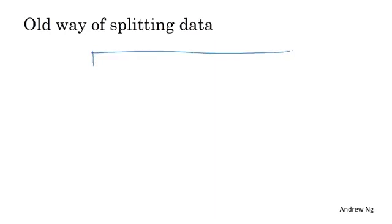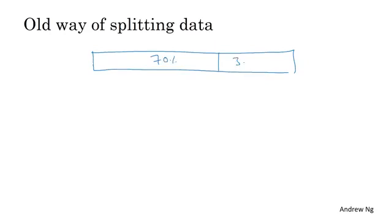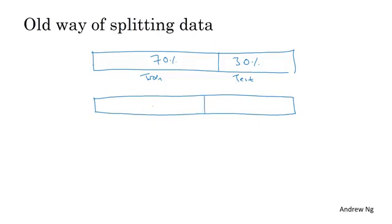You might have heard of the rule of thumb in machine learning of taking all the data you have and using a 70-30 split into a train and test set. Or if you had to set up train, dev, and test sets, maybe you would use a 60% training and say 20% dev and 20% test.